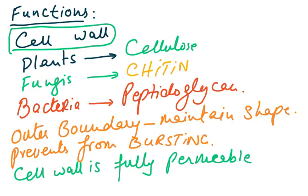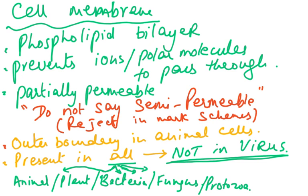Going through the functions of the cell wall: in plants it is made of cellulose, in fungi of chitin, in bacteria of peptidoglycan — not present in animal cells. It maintains shape, prevents bursting in plant cells, and is fully permeable. The cell membrane is a phospholipid bilayer (more on this in the next chapter). It prevents ions and polar molecules (water-soluble molecules) from passing through freely — they would need a channel protein. That is why we say it is partially permeable — do not use the word 'semipermeable' as it is rejected in mark schemes.